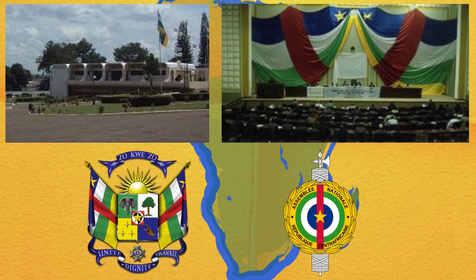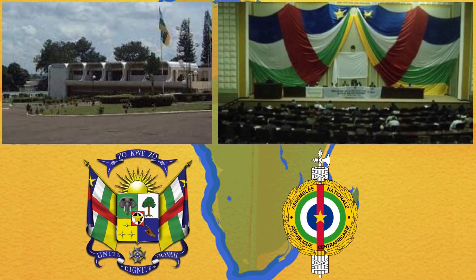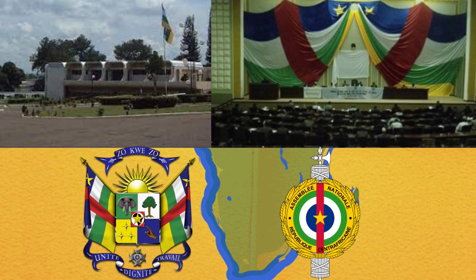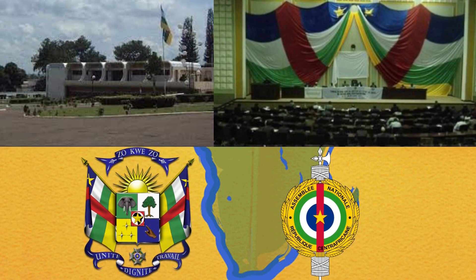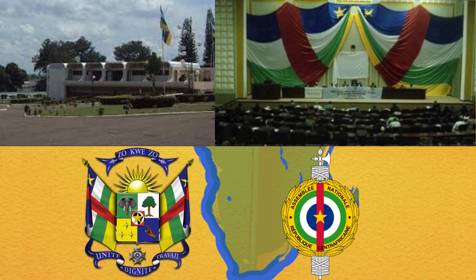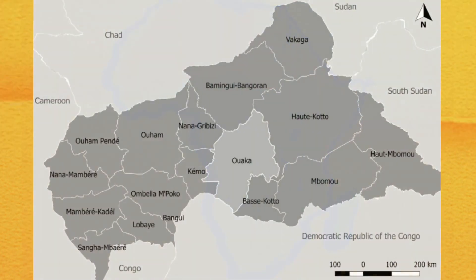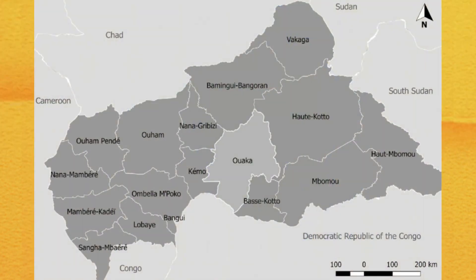Politics in the Central African Republic formally take place in a framework of a semi-presidential republic. In this system, the president is the head of state, with the prime minister as head of government. Executive power is exercised by the government, and legislative power is vested in both the government and parliament. The country is divided into 16 administrative prefectures and one autonomous commune, with the prefectures further divided into 71 sub-prefectures.